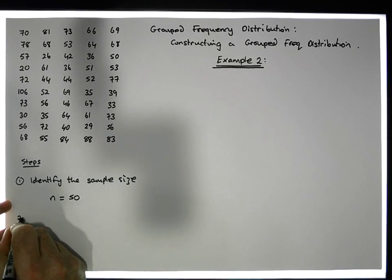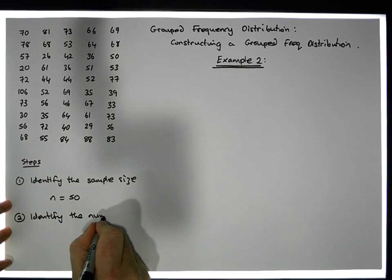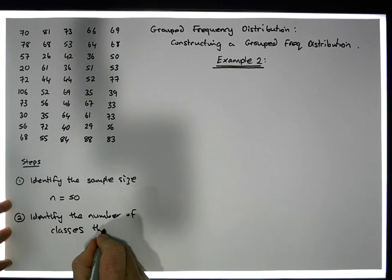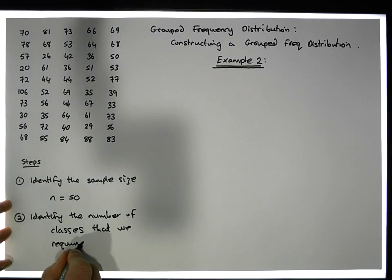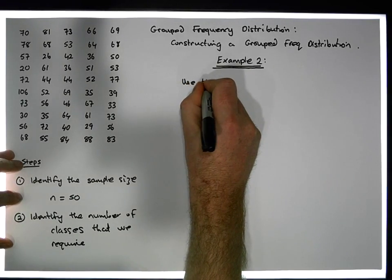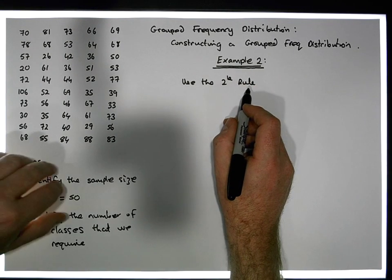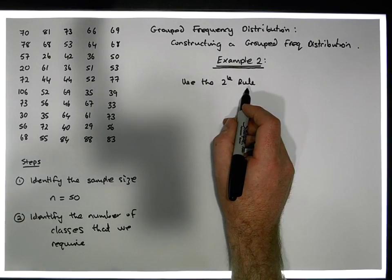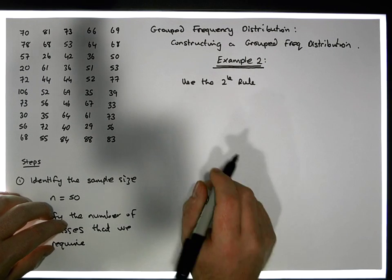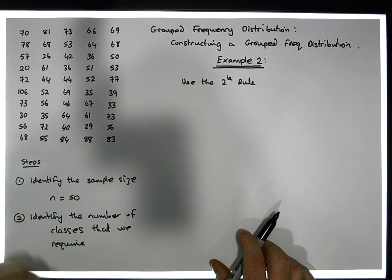Step two is to identify the number of classes that we require. The way we do that is we use what's known as the 2 to the power of k rule. It's like if you go to a doctor and you're reporting with a particular blood pressure — the doctor will look your blood pressure up on a chart. Similarly, this is a chart that allows us to determine, depending on the sample size, what is an appropriate number of classes we should have in our distribution.